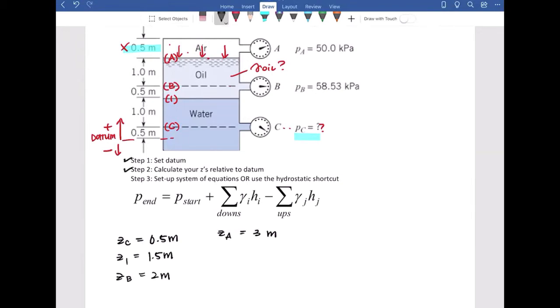Now step three is to set up your system of equations or use the hydrostatic shortcut. For the first part, I'm going to solve for gamma oil. We know we're moving down from A to B. We know that we have pressure at A and pressure at B.